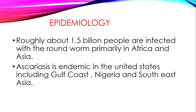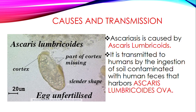Regarding epidemiology: roughly 1.5 billion people are infected with roundworm, primarily in Africa and Asia. It is one of the most common parasitic diseases. Ascariasis is endemic even in the United States, including the Gulf Coast, as well as in Nigeria and Southeast Asia.